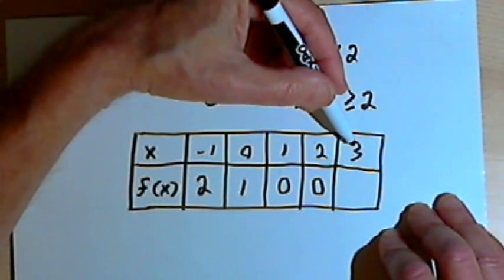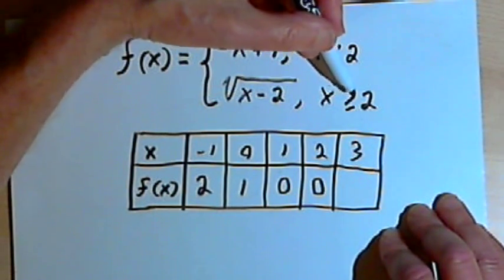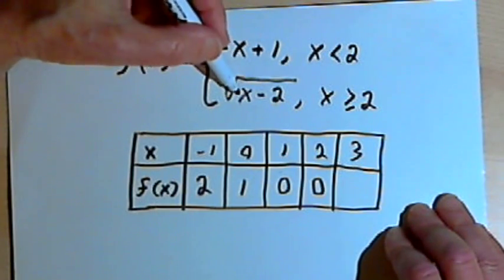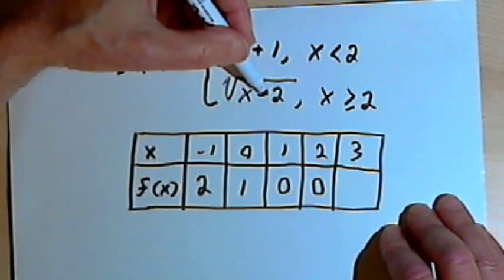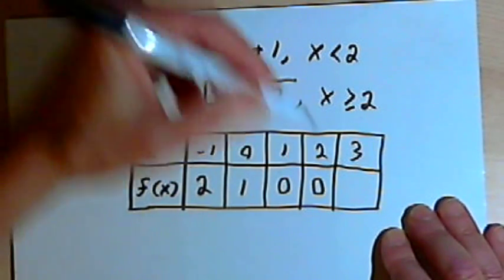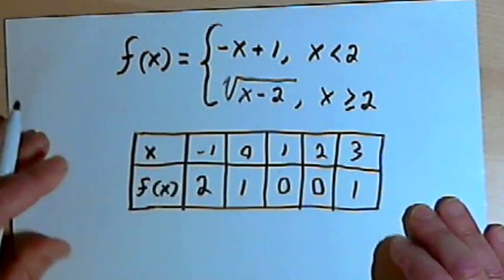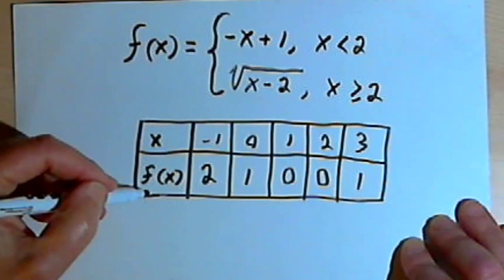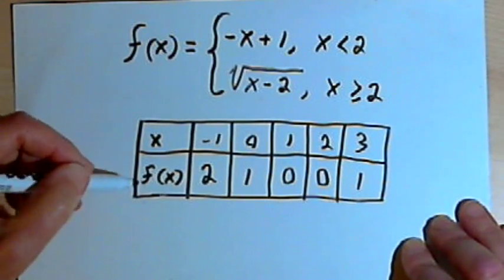The last number I have is 3. 3 is greater than 2, so I'm using the square root part. I want the square root of 3 minus 2. 3 minus 2 is 1, and the square root of 1 is 1. So there's my table of values for x and f. Remember f is the same as y.